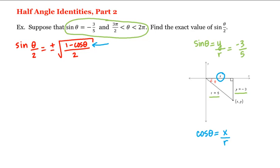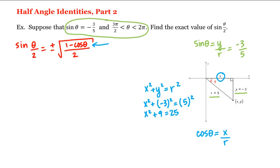To find x, we can use the Pythagorean theorem. Namely, x squared plus y squared is equal to r squared. Therefore, x squared plus negative three squared is equal to five squared, or x squared plus nine equals 25, so x squared equals 16, which means x is equal to plus or minus four.